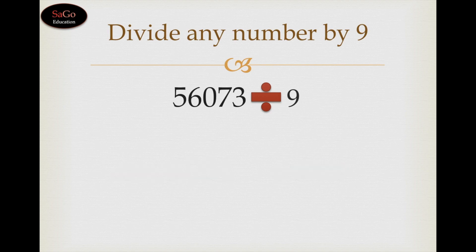Let's take one more sum. 56073 divided by 9. Write the first digit as it is, which is 5. 5 would be added to the next digit, that is 6. 5 plus 6 is 11.